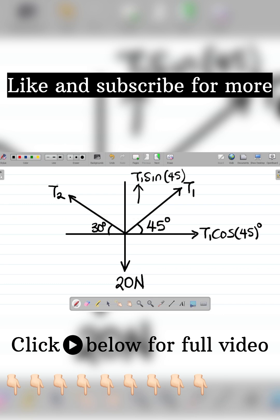For T2, which is this, let's resolve T2. Now the first thing is this: if I have my quadrant like this, this is positive X, this is positive Y.